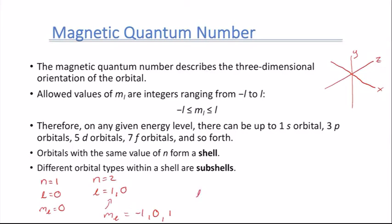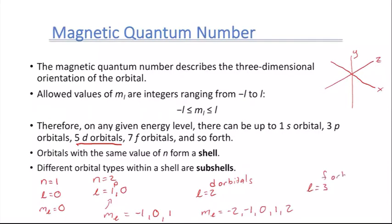For L=2 — our d orbitals — M sub L ranges from negative 2 to positive 2: that's negative 2, negative 1, 0, 1, and 2, giving five different types of d orbitals. For L=3, our f orbitals, we end up with seven possible f orbitals, and we can keep going from there.